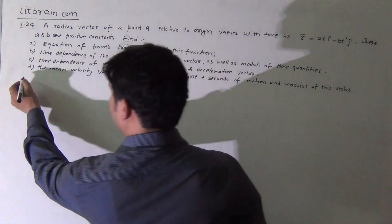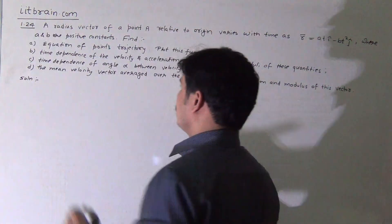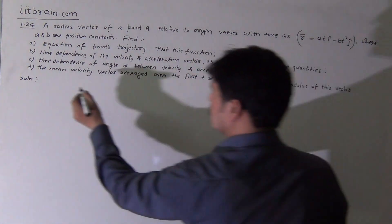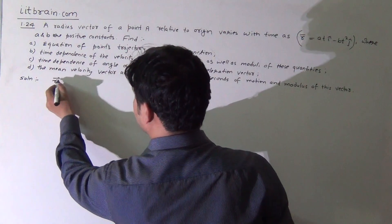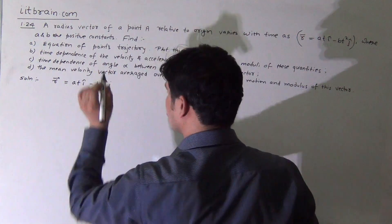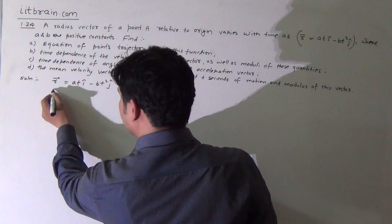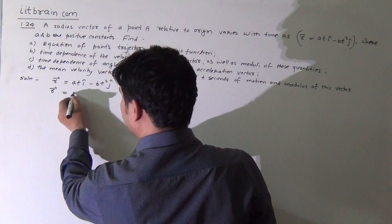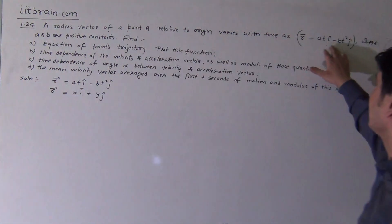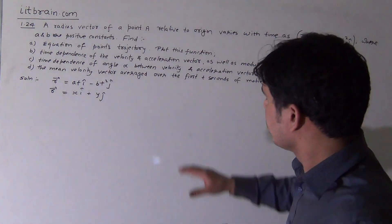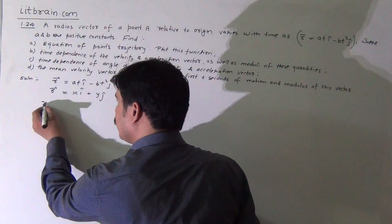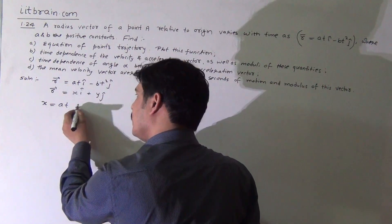We also need the time dependence of angle alpha between the velocity and acceleration vector, and the mean velocity vector averaged over the first t seconds of motion and its modulus. It is given that r vector equals at·î minus bt²·ĵ. Comparing this with the standard equation of the position vector x·î + y·ĵ in two dimensions — since the problem contains only î and ĵ, it is in two dimensions.